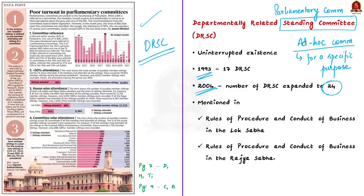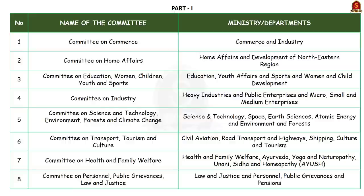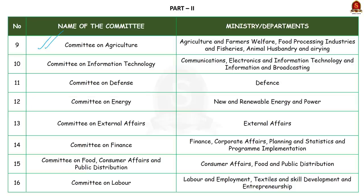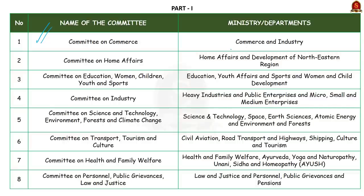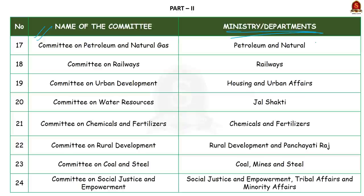The procedure for constitution of DRSCs is mentioned in the rules of procedure and conduct of business of both Lok Sabha and Rajya Sabha. There are 24 DRSCs constituted under different ministries — for example, the Committee on Commerce is constituted under the Ministry of Commerce and Industry.